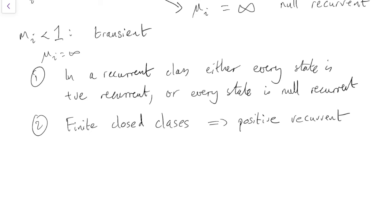And so, again, as before, this means we can refer to a class as a positive recurrent class or a null recurrent class. And if we have an irreducible chain, we can call it a positive recurrent Markov chain or a null recurrent Markov chain.